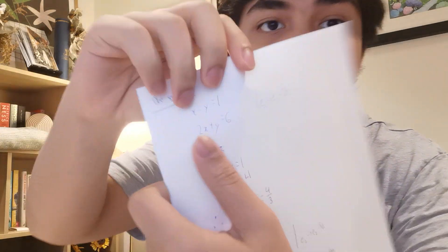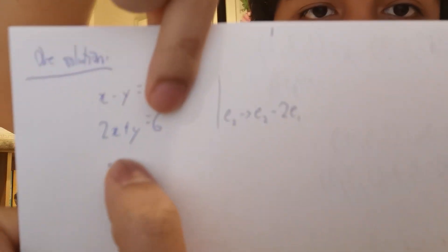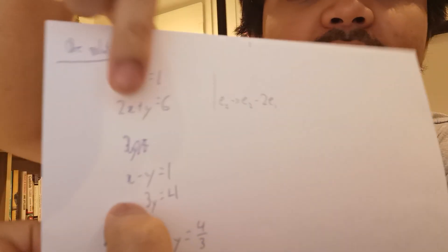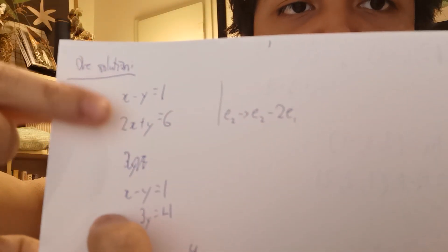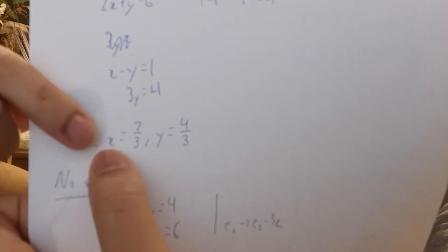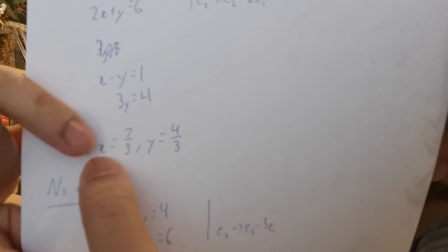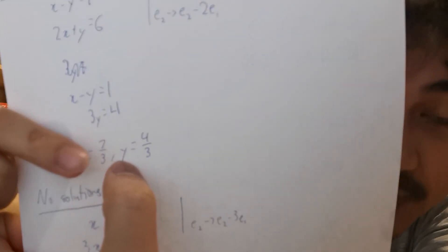A solution is something where you get a value for every unknown in the linear system that makes all the equations valid. For example, with just these two equations, I can do elementary row operations — subtract the second equation by the first times two — and get x equals 7/3 and y equals 4/3.